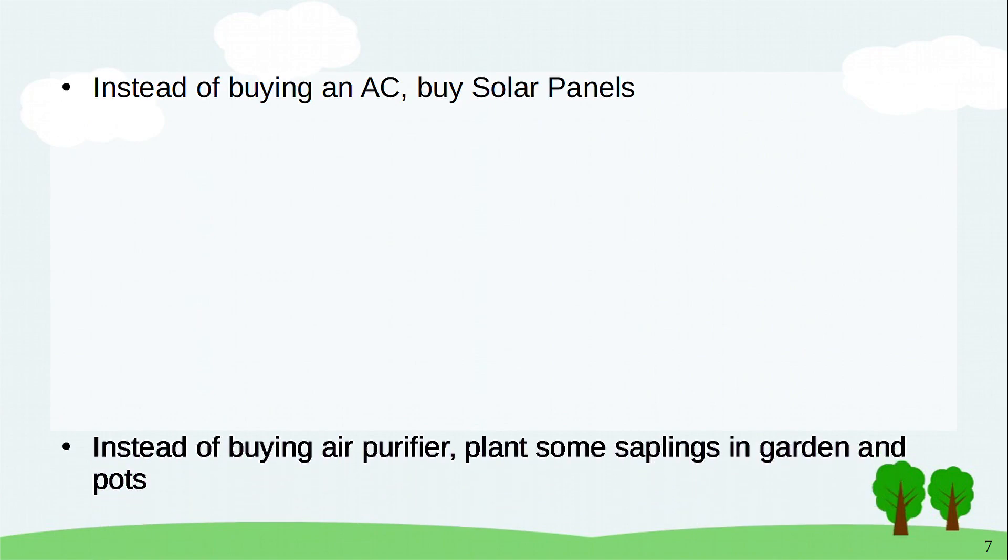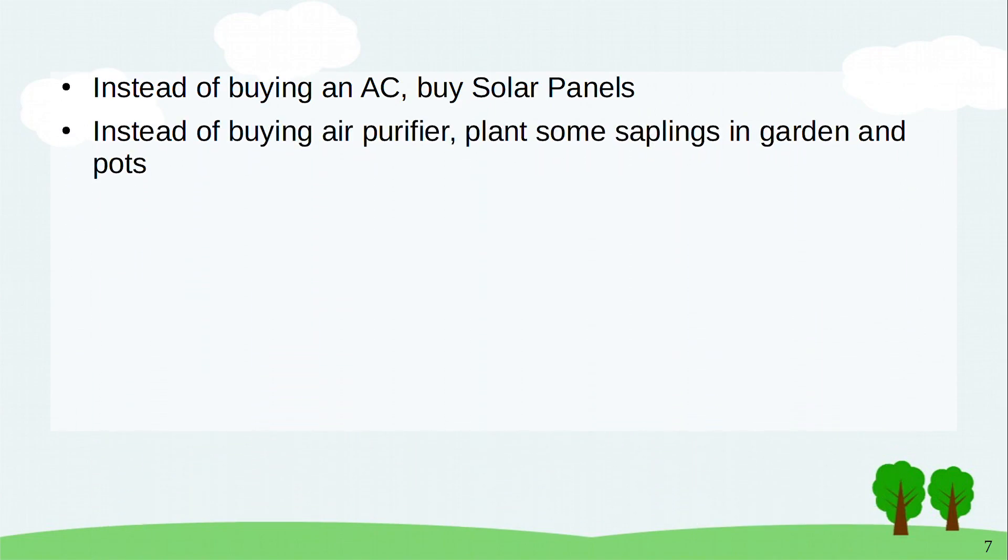Instead of buying an AC, buy solar panels. Instead of buying air purifier, plant some saplings in garden and pots. Instead of extensive farming, go for organic farming.